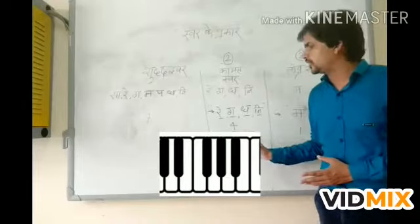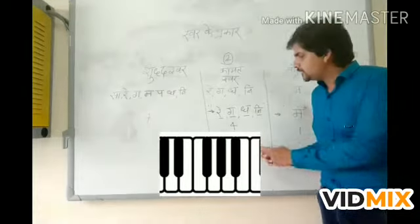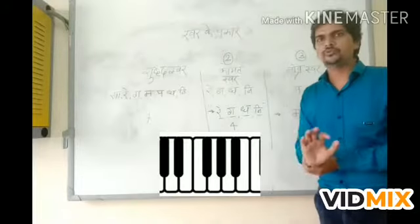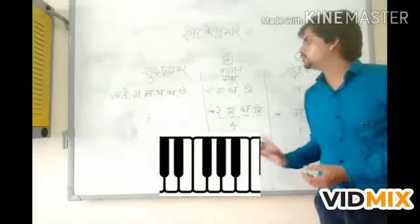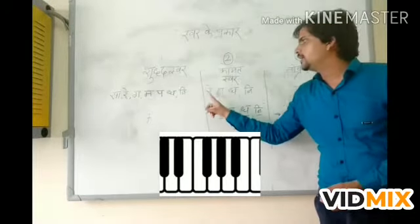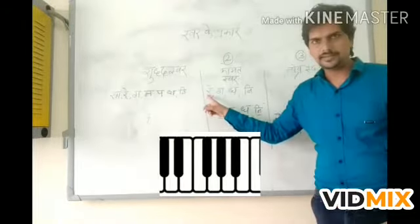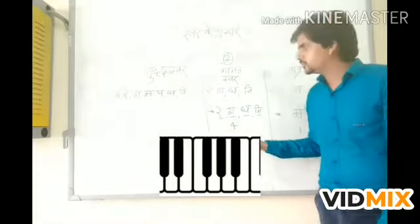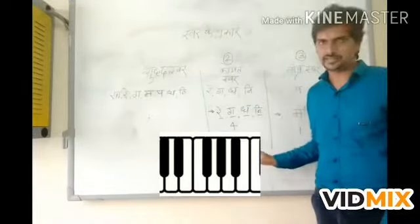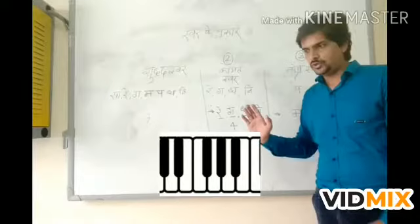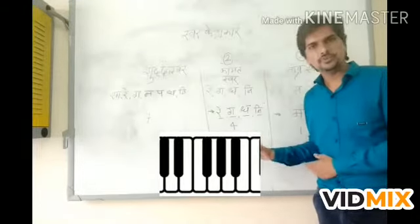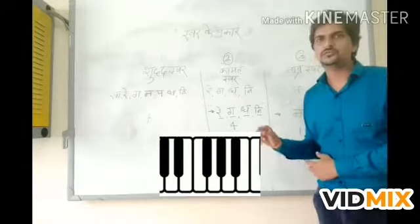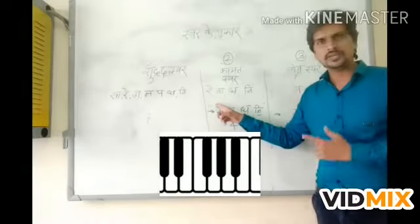These are black keys, and these are white keys. This white key is Komal Ray. Komal Ray — the note between Sa and Re — is called Sa and Re. The first key before Re is what we call Komal Ray.